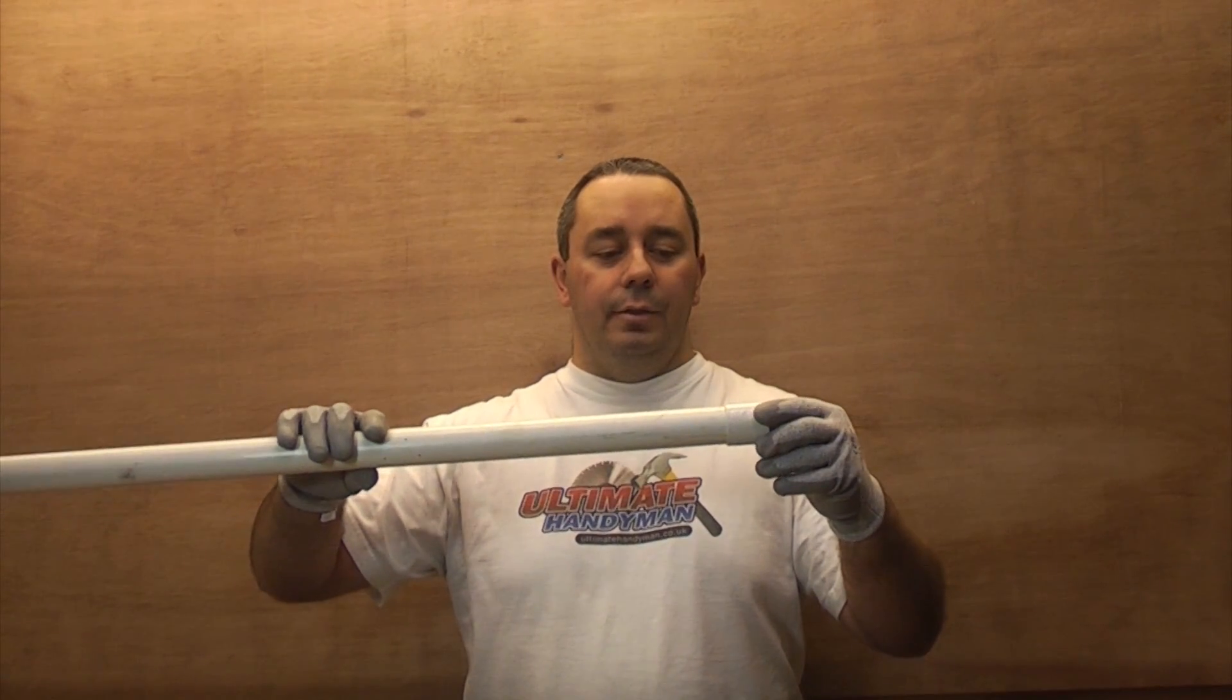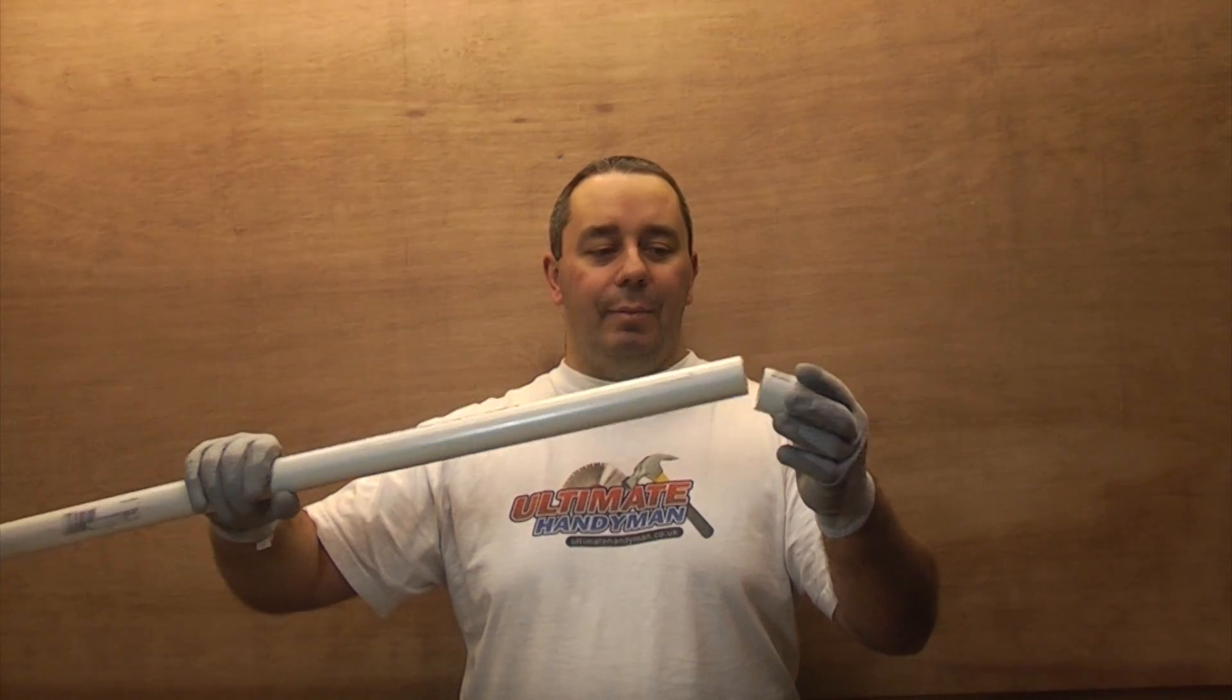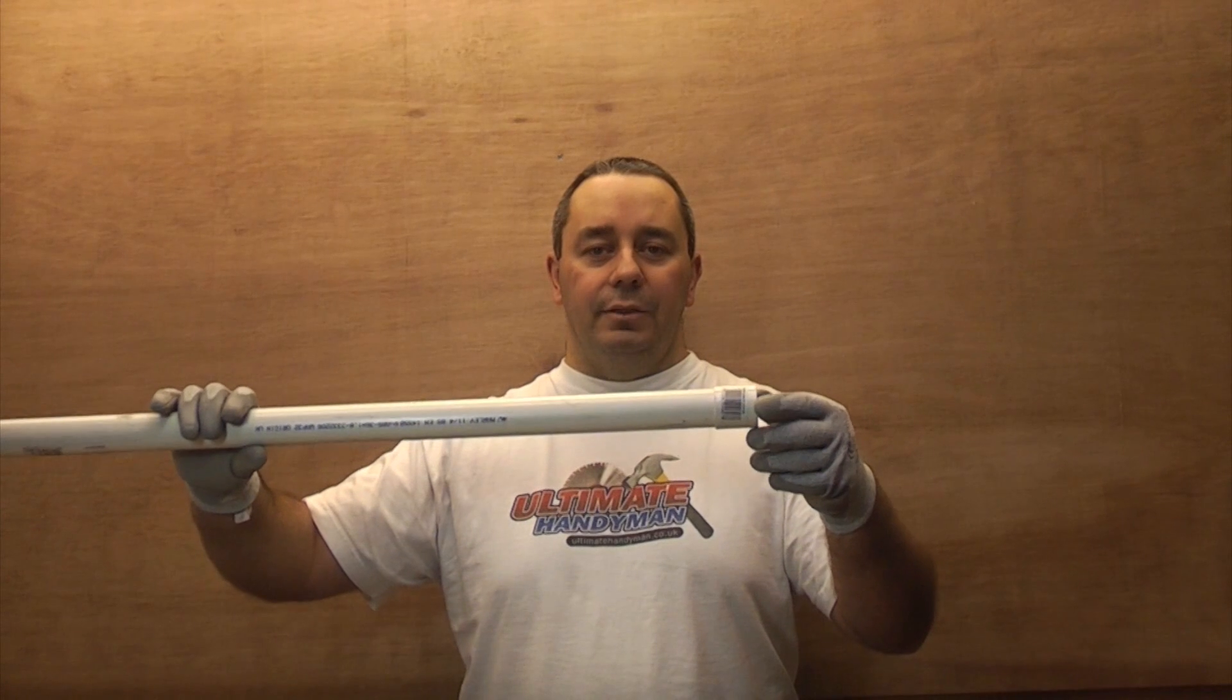If you make a joint using a socket on solvent weld pipe like this, you can guarantee it's going to last a long time and it's highly unlikely that it will leak. Once you put the solvent on, it actually melts the pipe, so the pipe and socket melt together, which is a kind of welding. That's why they call it solvent weld—because the solvent actually melts the plastic.